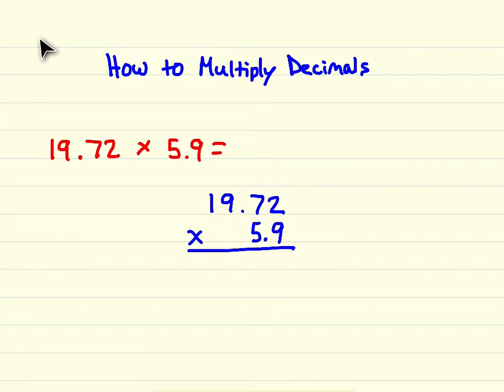So now we just need to multiply like normal. 9 times 2 is 18, carry the 1. 9 times 7 is 63, plus 1 is 64. 9 times 9 is 81, plus 6 is 87. And then 9 times 1 is 9, plus 8 is 17.